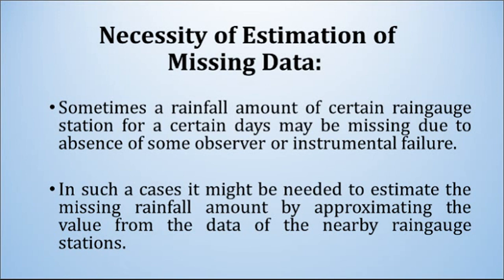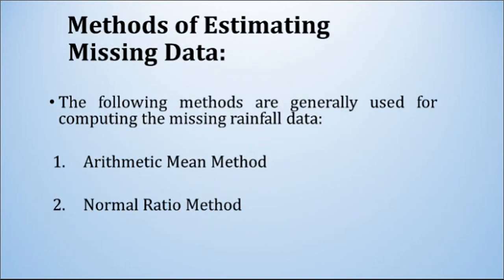In such a case, it might be needed to estimate the missing rainfall amount by approximating the value using data from nearby rain gauge stations. There are two methods generally used for computing the missing rainfall data: the first is the Arithmetical Mean Method, and the second is the Normal Ratio Method.